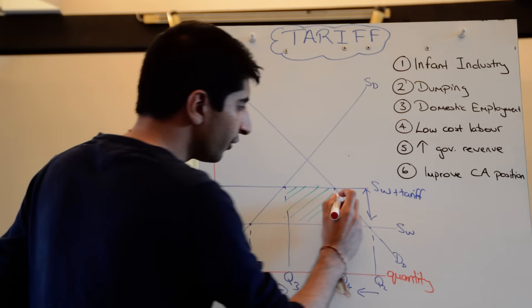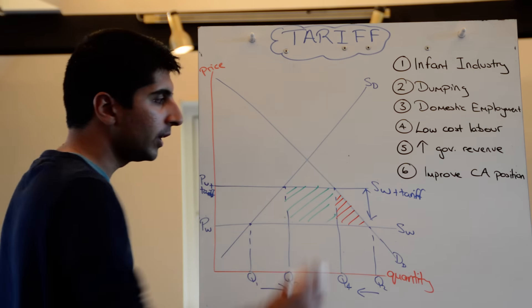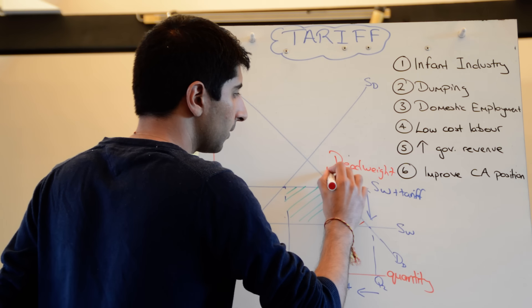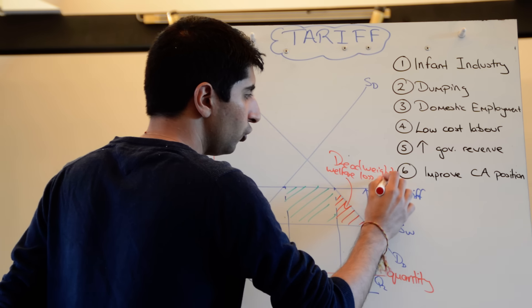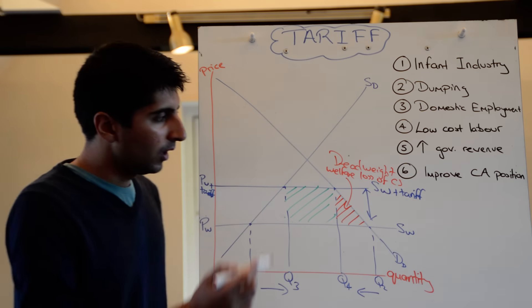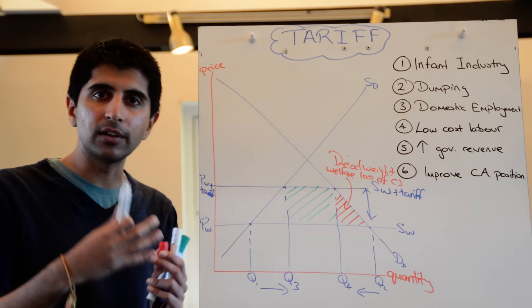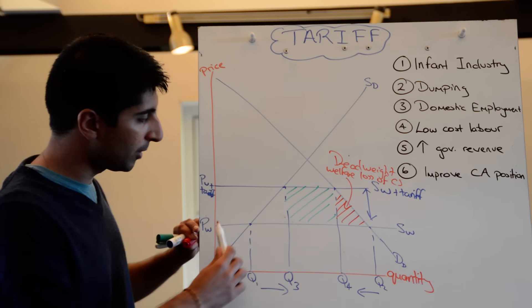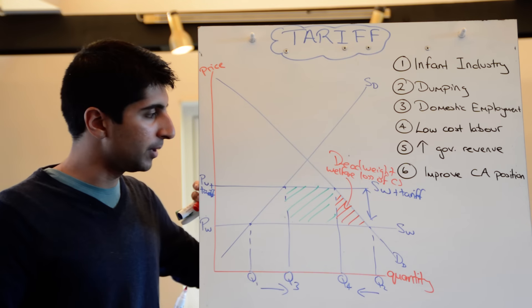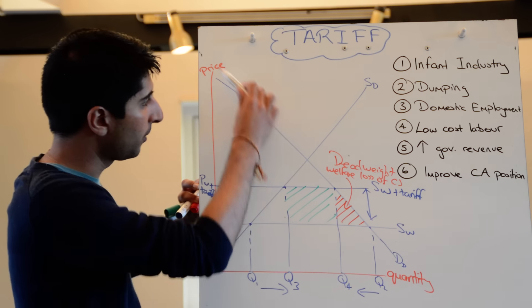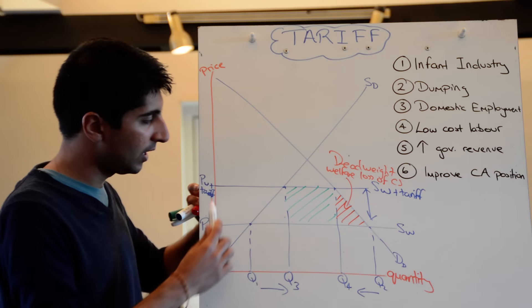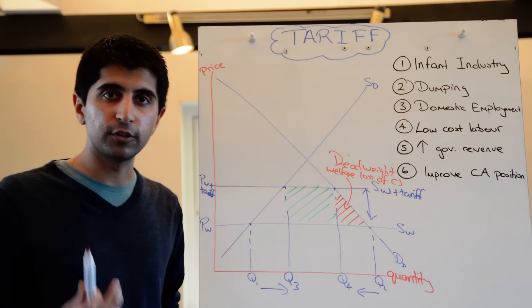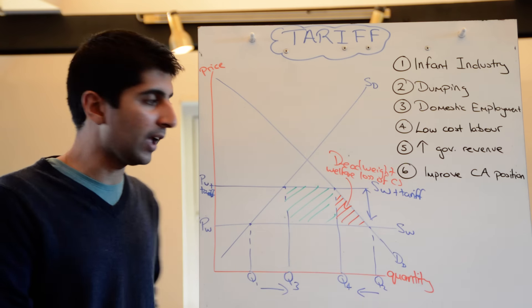What we can also shade in are areas of losses. So this red triangle here is a deadweight loss of consumer surplus. If you want to understand why, you can watch my next video, the detailed dissection of the tariff diagram. But you can work it out. So the initial consumer surplus under PW was this massive triangle. When you raise the price to PW plus tariff, the triangle of consumer surplus has gone smaller. So the total general loss of consumer surplus is this kind of trapezium here. But this is one area that's not recovered. It's a deadweight loss of consumer surplus. Watch my next video if you want detailed understanding why.